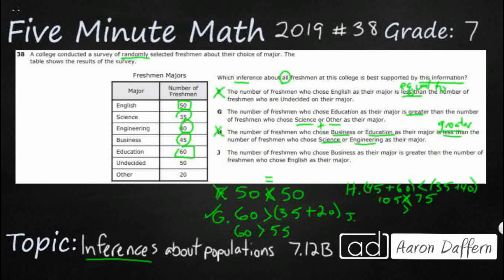J, the number of freshmen who chose business as their major - business is 45 - is greater than the number of freshmen who chose English, which is 50. You can just look at two numbers and say 45 is not greater than 50, it is less than 50. Less than would have been better, so that is incorrect. So it is not F, not H, not J. Just like we thought when we ran across this G, it looks to be our answer. The number of freshmen who chose education as their major is greater than the number of freshmen who chose science or other as their major.